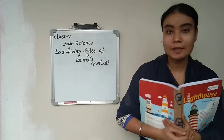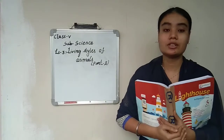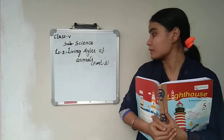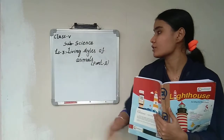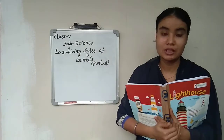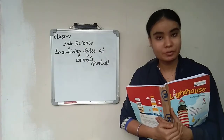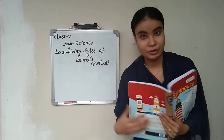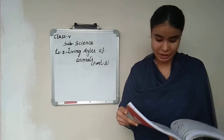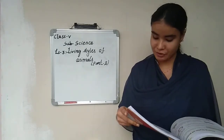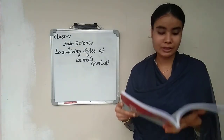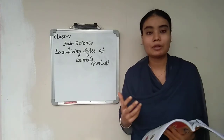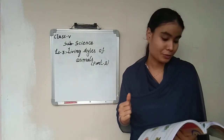Hello kids, how are you all? Today we are going to start Part Two of Lesson Number Three — Living Styles of Animals — for Class 5, Subject Science. Take out your reader, page number 133. Before starting Part Two, let us recollect what we have learned in Part One.